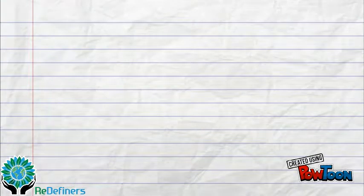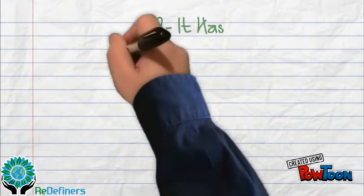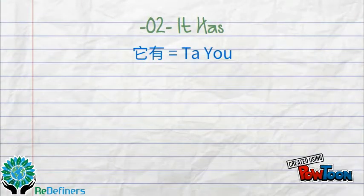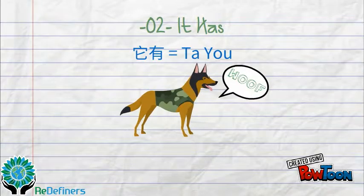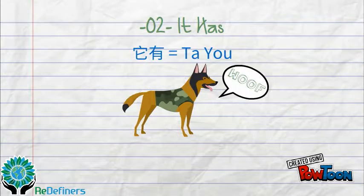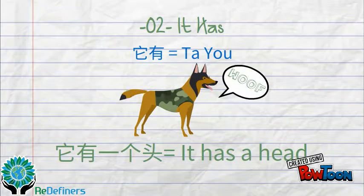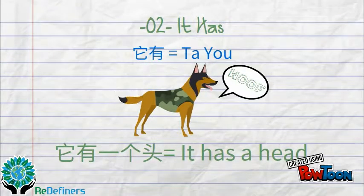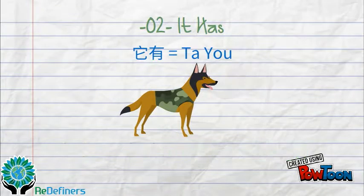Number two: it has. In Mandarin, it is 他有 (tā yǒu). Let's take a cute dog as an example. Same as us, it has one head, so it is 他有一个头.